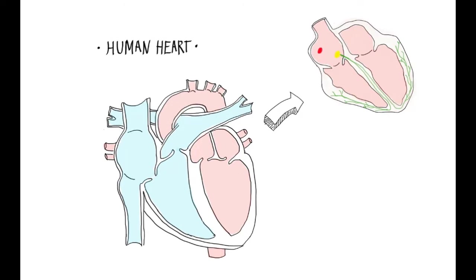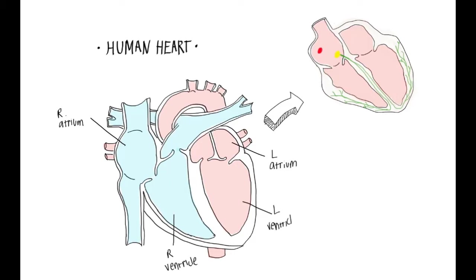The heart is composed of two atriums and two ventricles. Here we see the right atrium, and here we see the left atrium. Beneath the atriums we see the ventricles — this is the right ventricle, and this is the left ventricle. The left ventricle is more muscular than the right ventricle because it has to pump blood to longer distances.